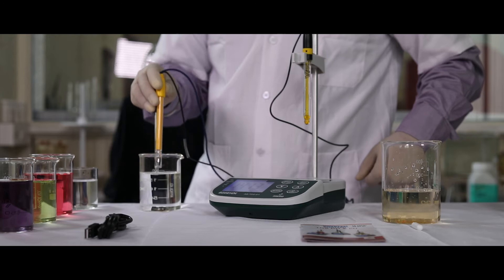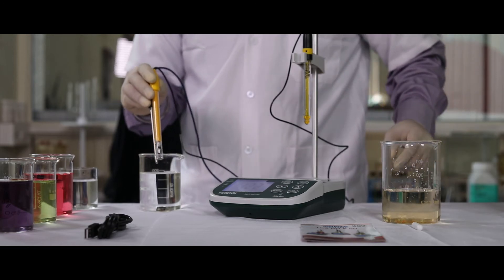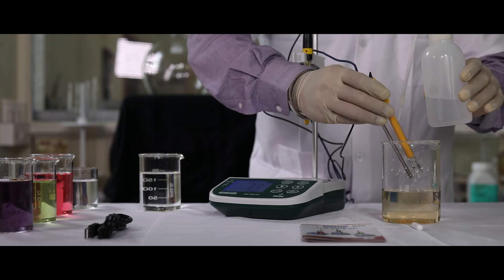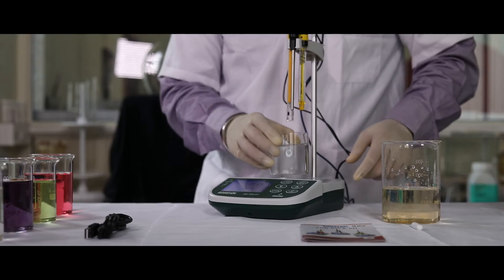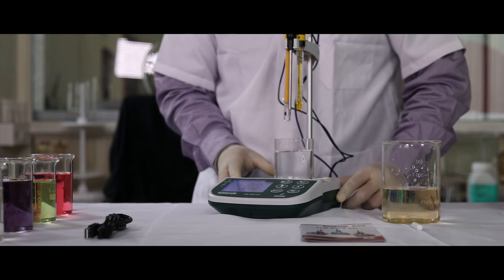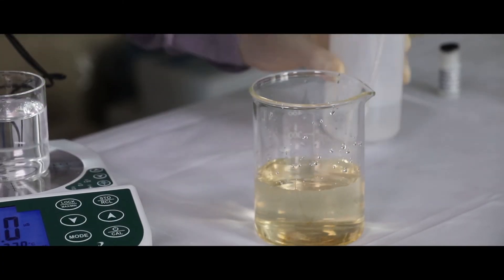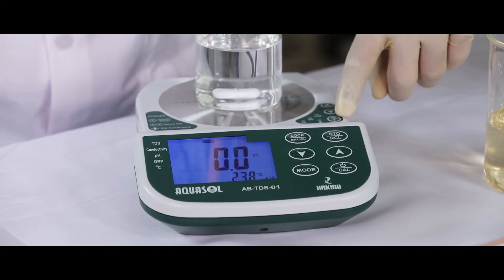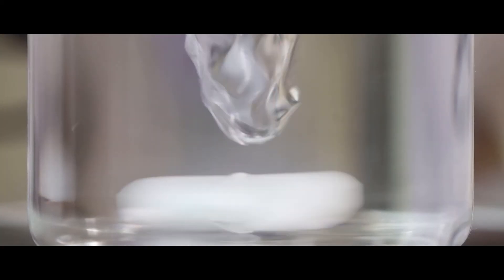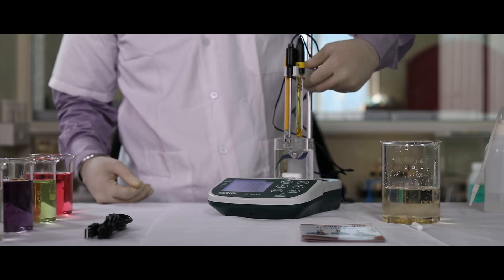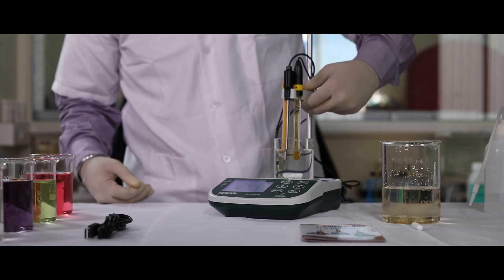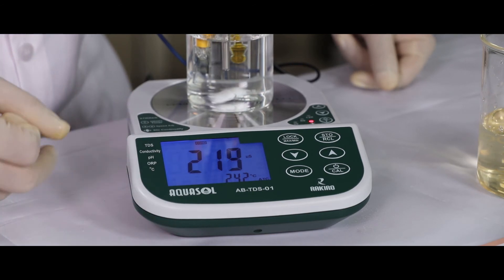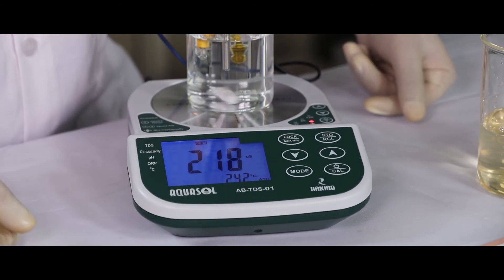Now both PH and conductivity have been calibrated and can be used to check the readings of the sample. Collect the sample in a beaker, place it on the meter, wash the stirrer in fresh water and put it into the beaker and start the stirring procedure. Slowly slide the electrode holder into the sample. Now the meter will read the values of the sample.